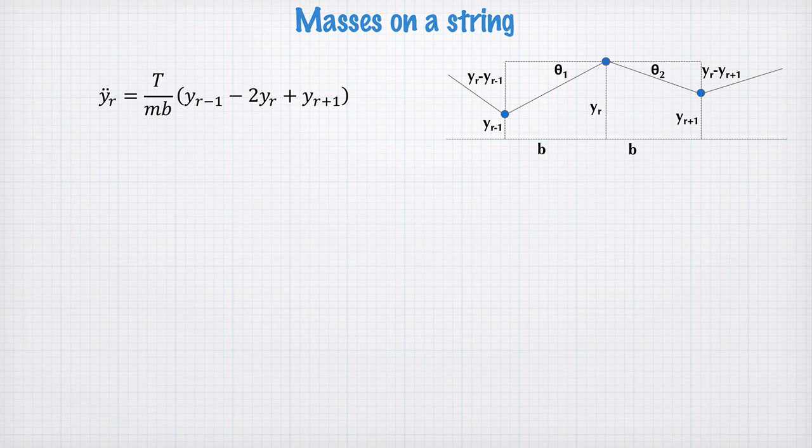So now we're going to work towards our wave equation from this discrete situation that we looked at a second ago. Here's the equation we have for the acceleration of yr as a function of the positions of the adjacent masses.